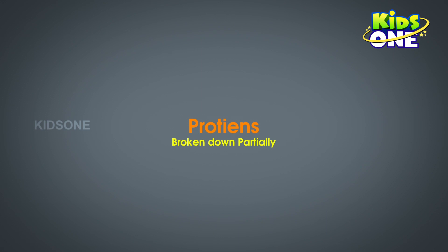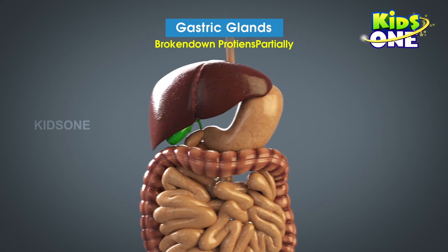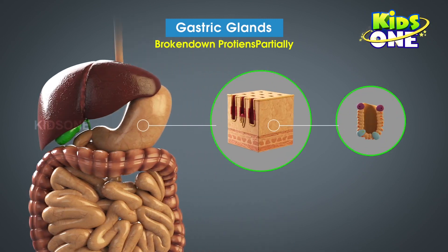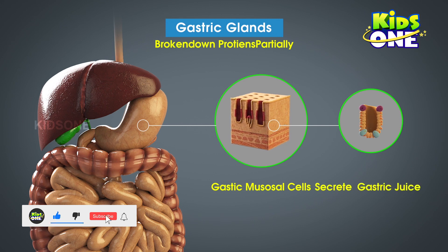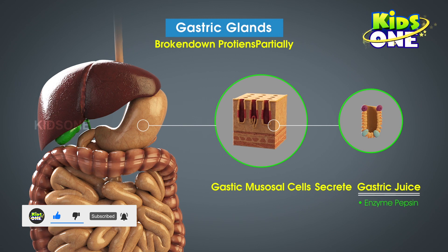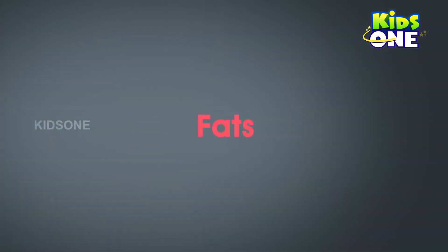The partial breakdown of proteins is taken care of by the gastric glands present in the stomach. The specialized cells in the gastric mucosa of the stomach secrete a juice known as the gastric juice. This contains the enzyme pepsin, apart from other components. Pepsin helps in breaking down proteins. The other nutrient — fats — cannot be broken down in the same way.